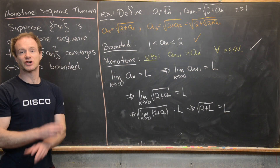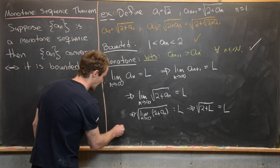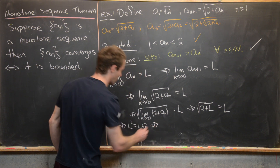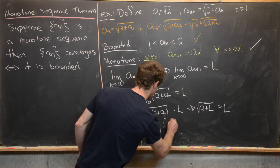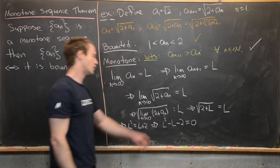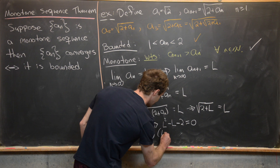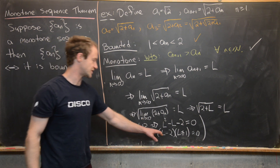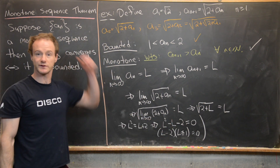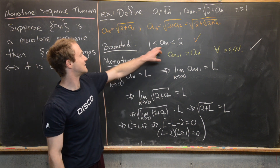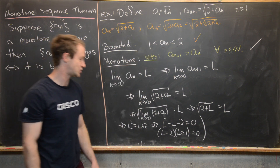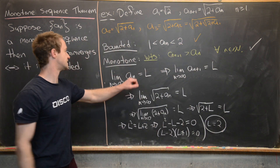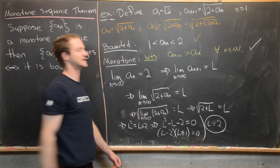That equation is easy to turn into a quadratic. Squaring both sides gives L squared equals L plus 2, or equivalently L squared minus L minus 2 equals 0. Factoring the left side: (L minus 2)(L plus 1) equals 0, giving solutions L equals 2 or L equals negative 1. Since our sequence is always between 1 and 2, we know L must equal 2. So the limit of the sequence is 2.